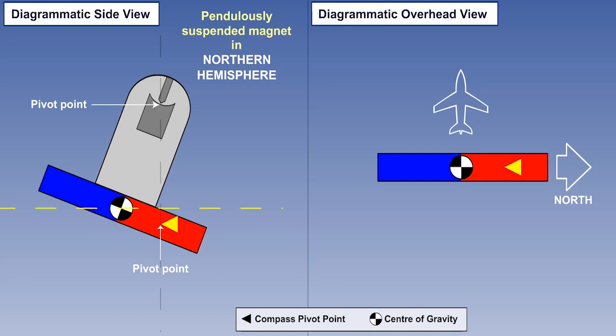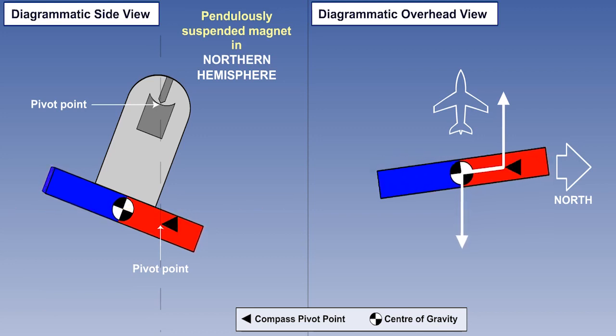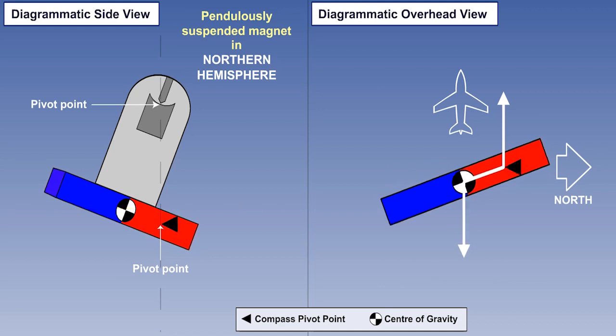Because of dip, we can see that the end of the magnet which is attracted to the nearest terrestrial magnetic pole, in this case the north pole, hangs down below the horizontal. This means that the magnet's pivot point is no longer overhead the centre of gravity. Instead, we can see it is closer to the nearer pole. The acceleration acts on the pivot point. However, the reaction to the acceleration acts on the centre of gravity. This produces a turning moment or couple, which causes the compass needle to rotate, even though the aircraft is not turning.